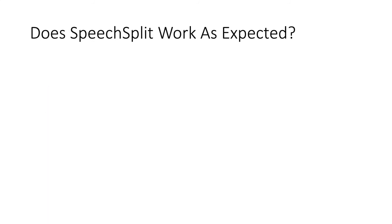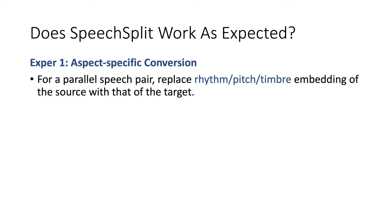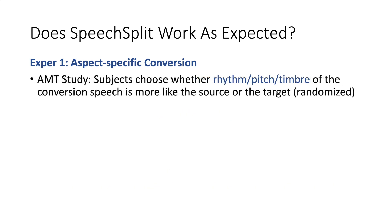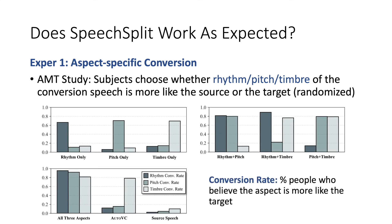To evaluate whether SpeechSplit really works as expected, we performed several experiments. The first one is the aspect-specific conversion that we have shown on our demo webpage — we welcome you to check it out. We also performed a subjective evaluation on Amazon Mechanical Turk, where subjects are asked whether each of the aspects is more similar to the source or the target. These bar plots show the conversion rates, which is the percentage of responses that choose the target. All the conversions have high conversion rates for the aspects that are converted and low for the rest. For example, if we only convert the rhythm, only the rhythm aspect has a high conversion rate.